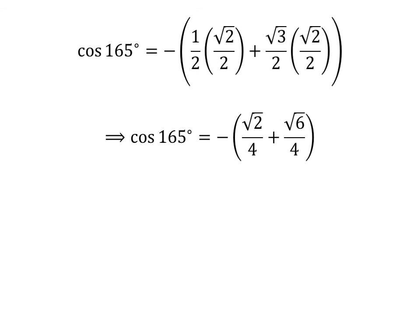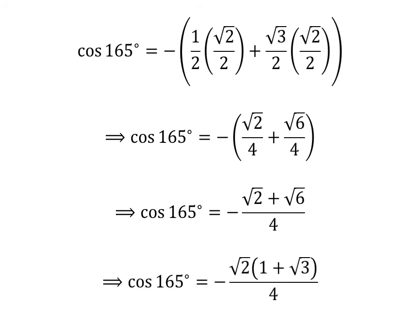Straight multiplication gives us cosine of 165 degrees is equal to minus square root of 2 over 4 plus square root of 6 over 4. As the denominator of both fractions is the same, cosine of 165 degrees is equal to minus square root of 2 plus square root of 6, all over 4. Taking out the common factor square root of 2 in the numerator gives us cosine of 165 degrees is equal to minus square root of 2 times open bracket 1 plus square root of 3 close bracket over 4.